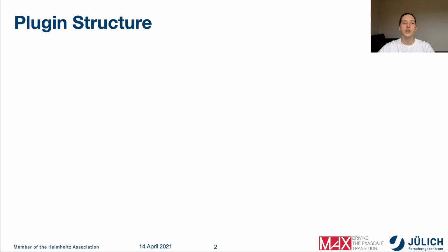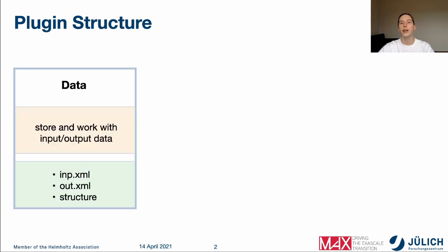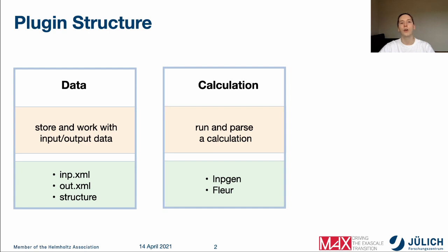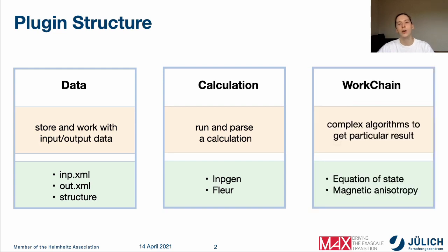To do this we will look into the structure of the plugin and understand what are the main objects one deals with when using this plugin. First, we will cover the data objects — objects that represent inputs and outputs of a single calculation. For example, a data object represents an input.xml file which might be a single input of a Floor calculation. Next, we'll consider the calculation concepts and see how a single calculation process is represented in AIDA. Finally, we'll switch to the best part of the whole AIDA code — the work chain — which allows one to automatize routing tasks to calculate a particular property of a material, for example an equation of state.